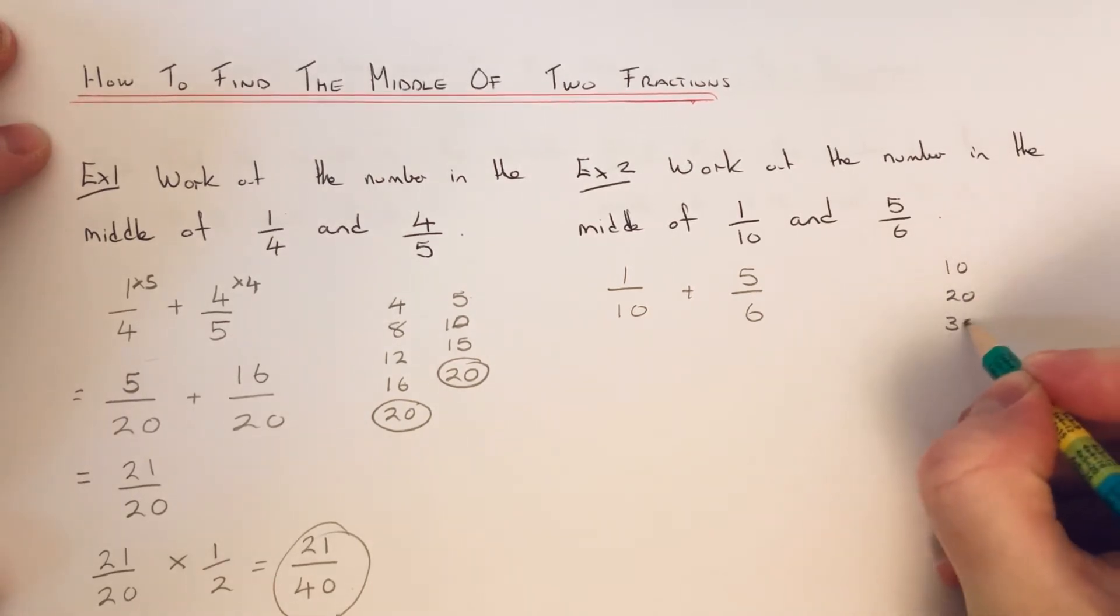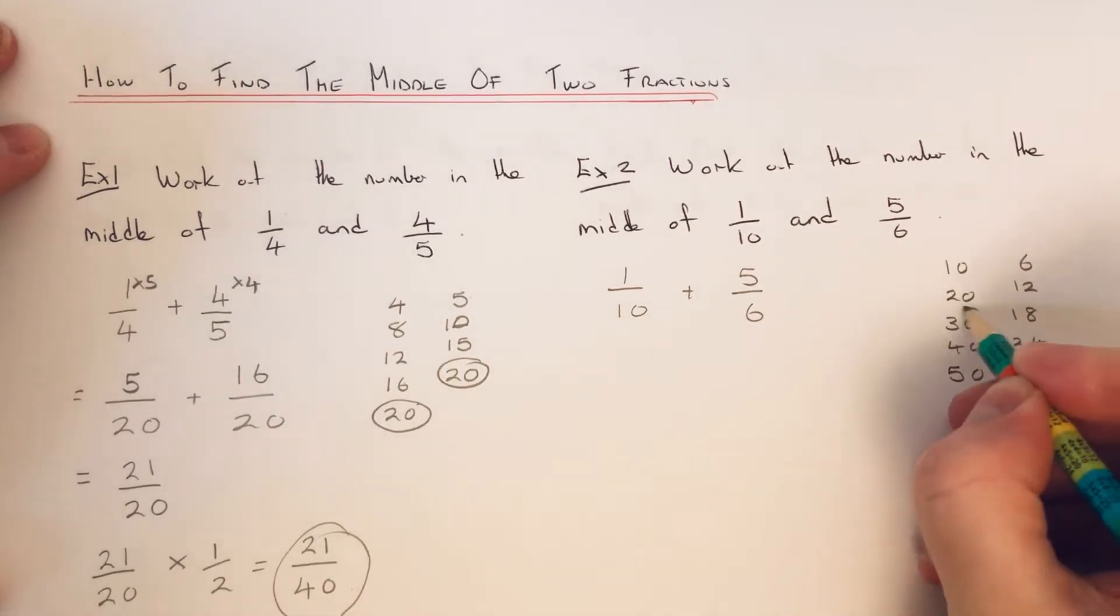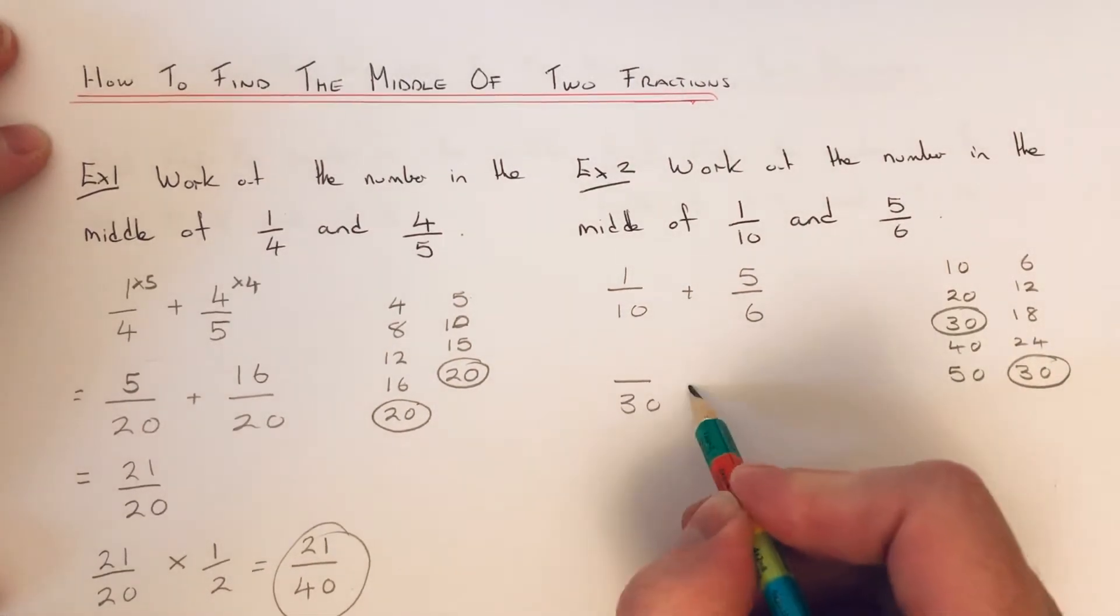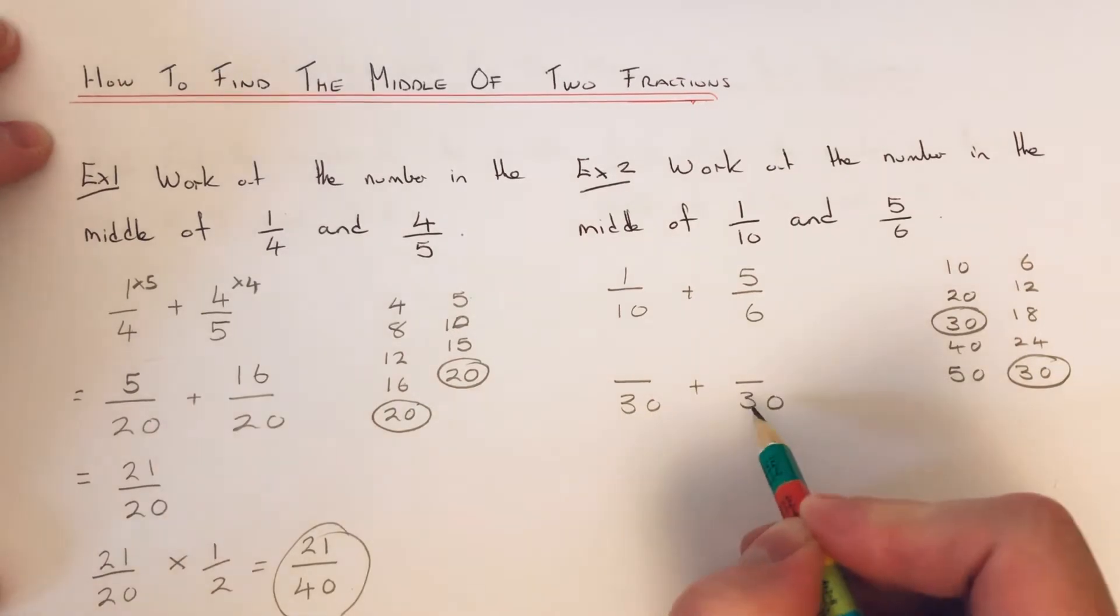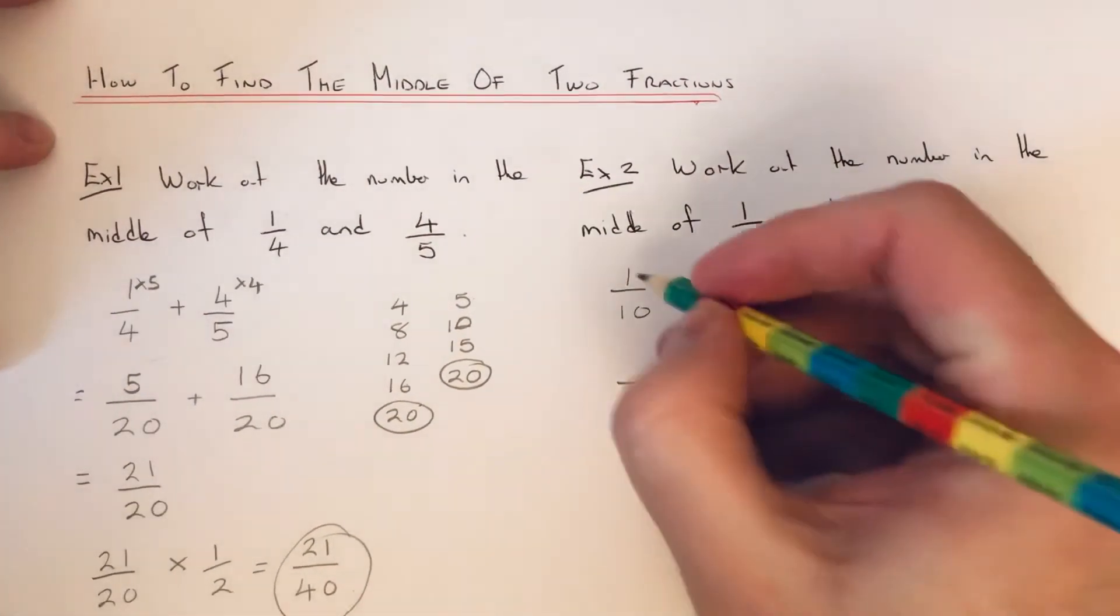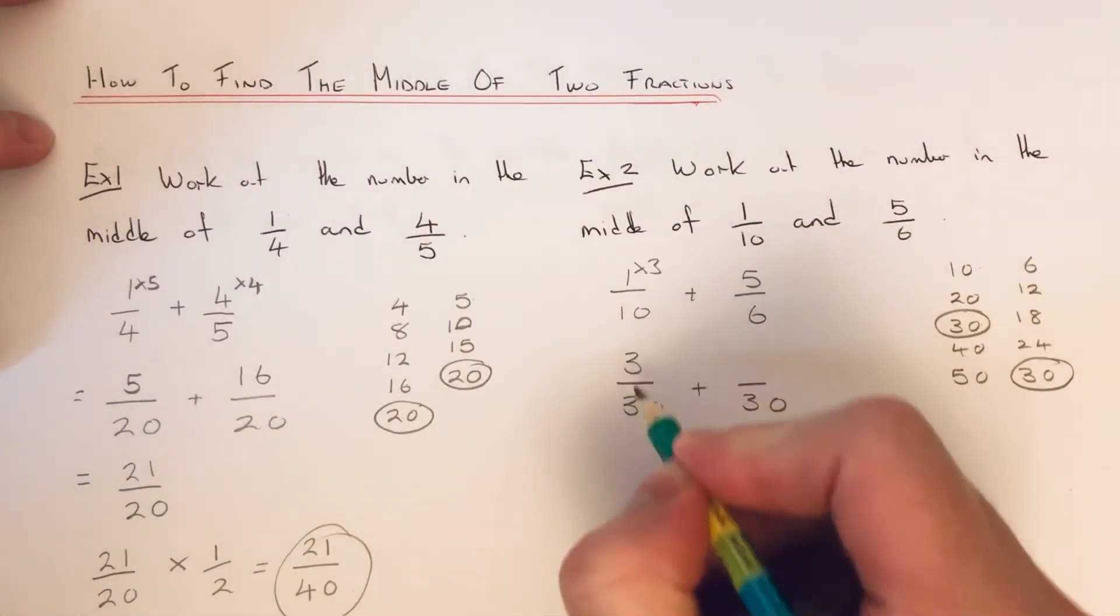So let's write our tens down and write down our sixes. Our lowest common multiple of our denominators is thirty. So if we put this on the bottom of our fractions, ten goes into thirty one, two, three times. So times this number by three. One times three is three.